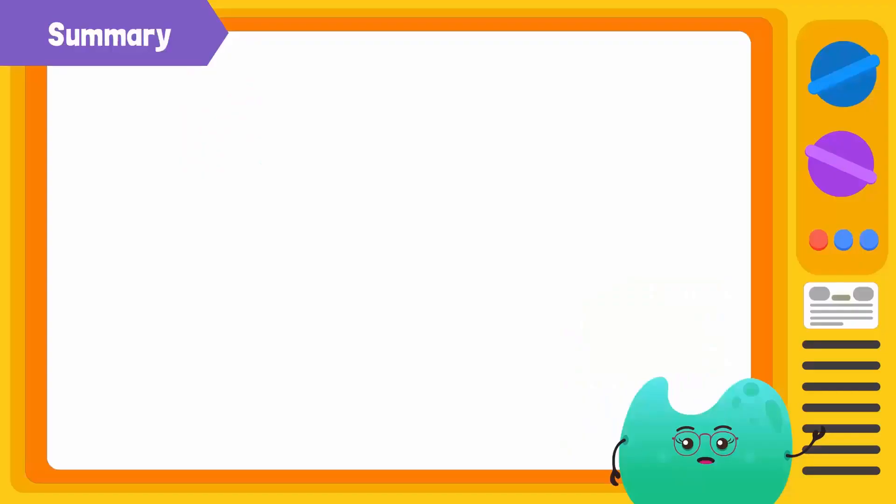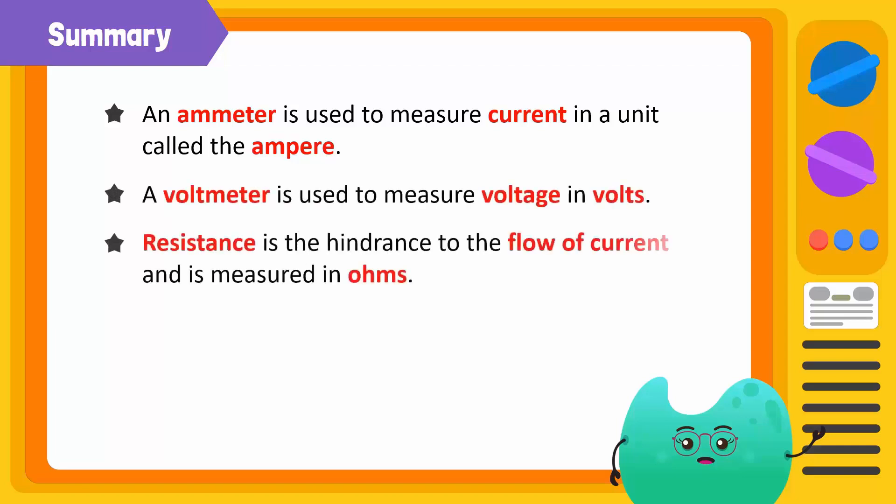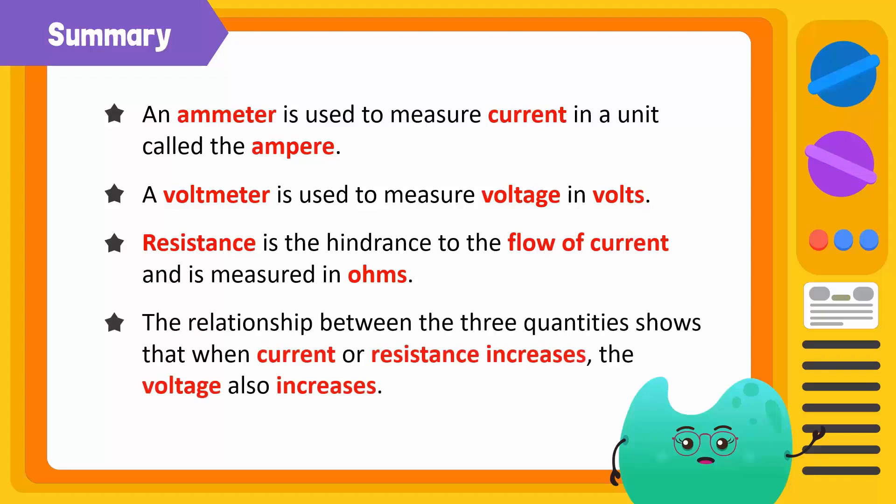To summarize, an ammeter is used to measure current in a unit called the ampere. A voltmeter is used to measure voltage in volts. Resistance is the hindrance to the flow of current and is measured in ohms. The relationship between the three quantities shows that when current or resistance increases, the voltage also increases.